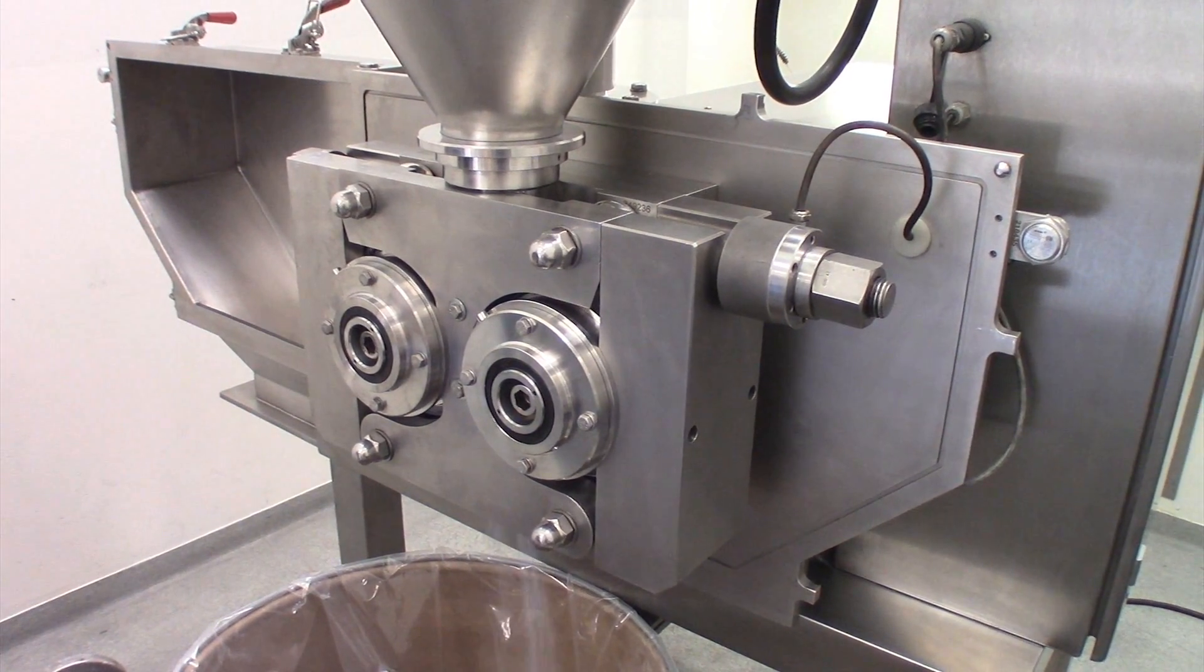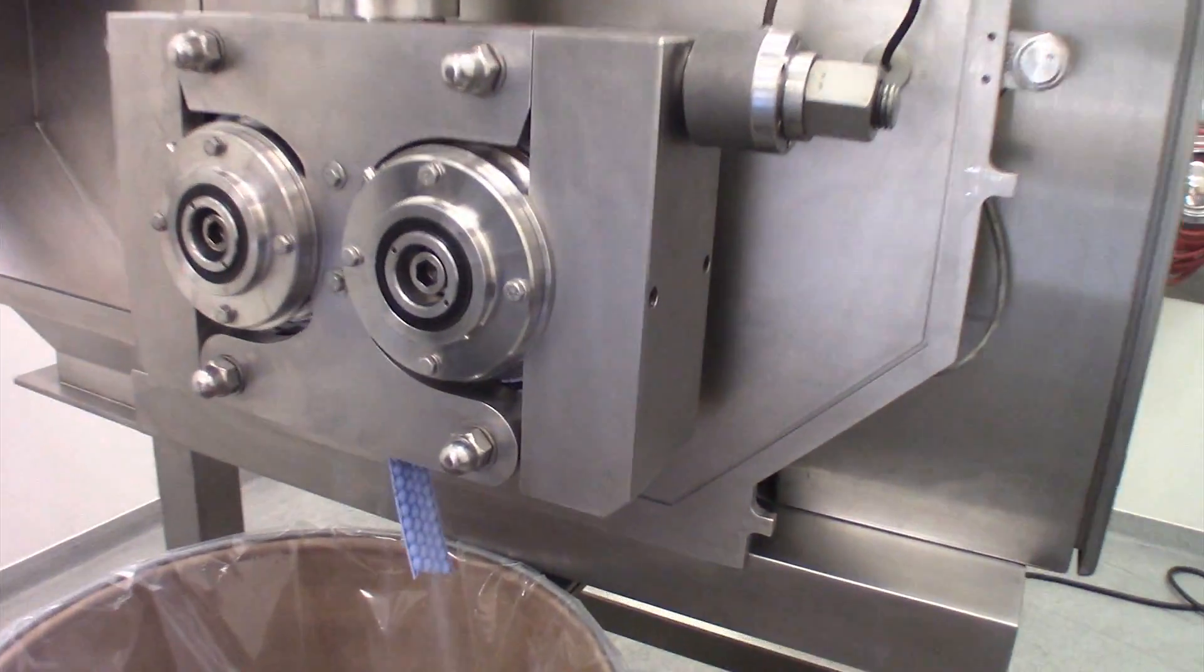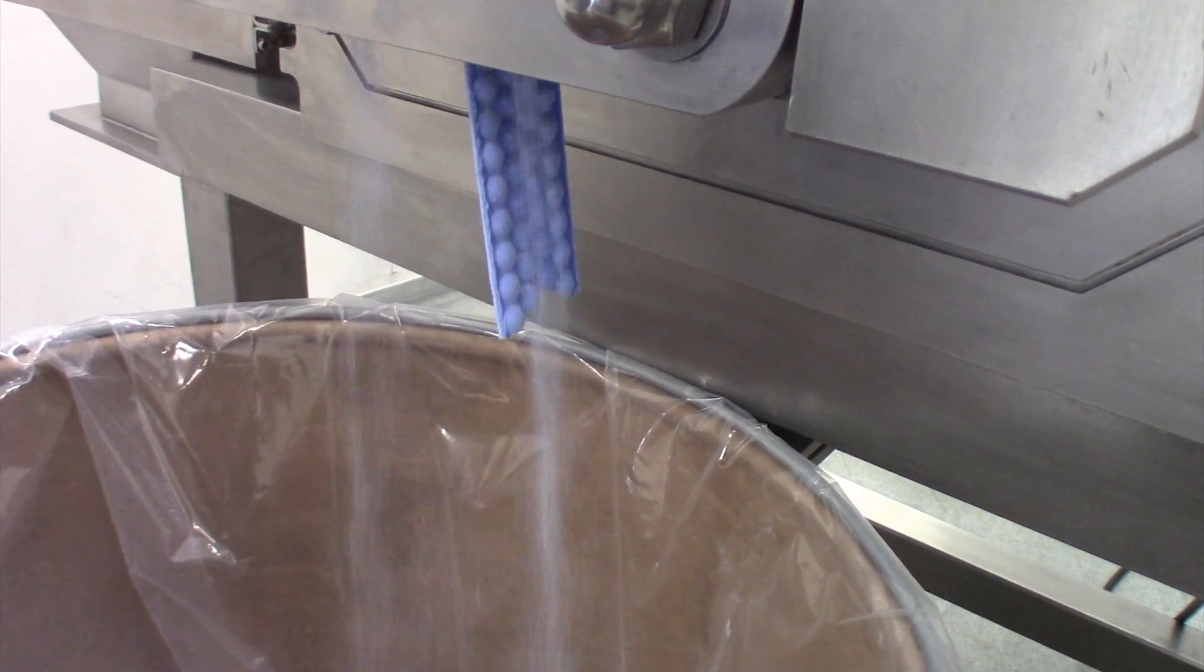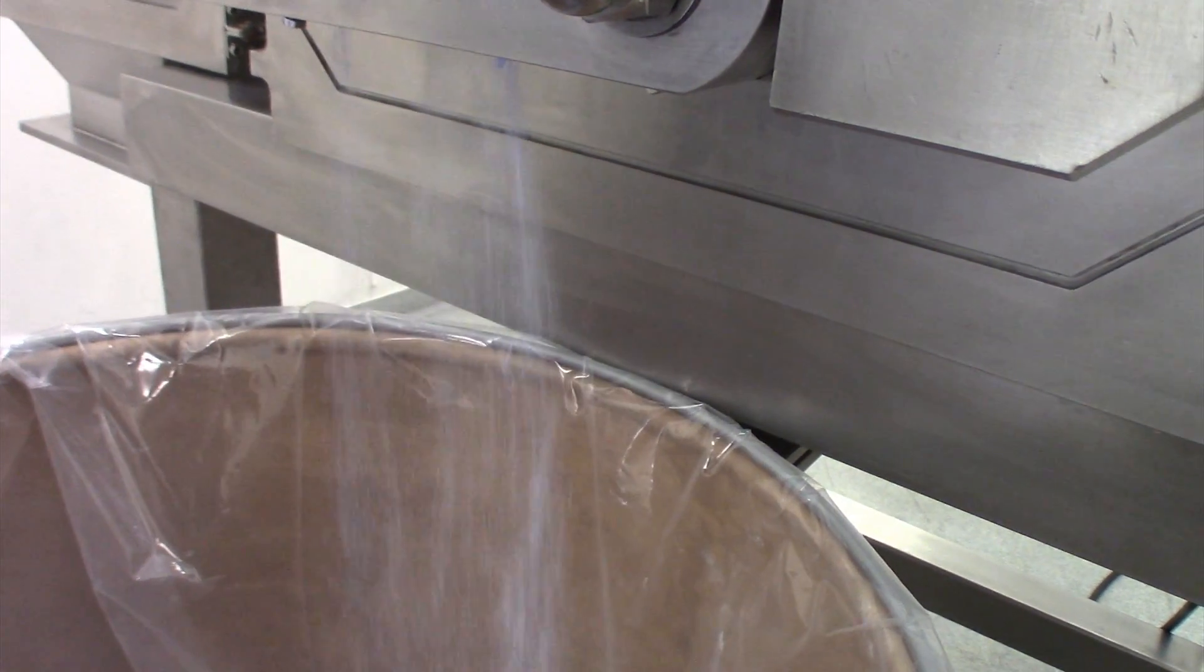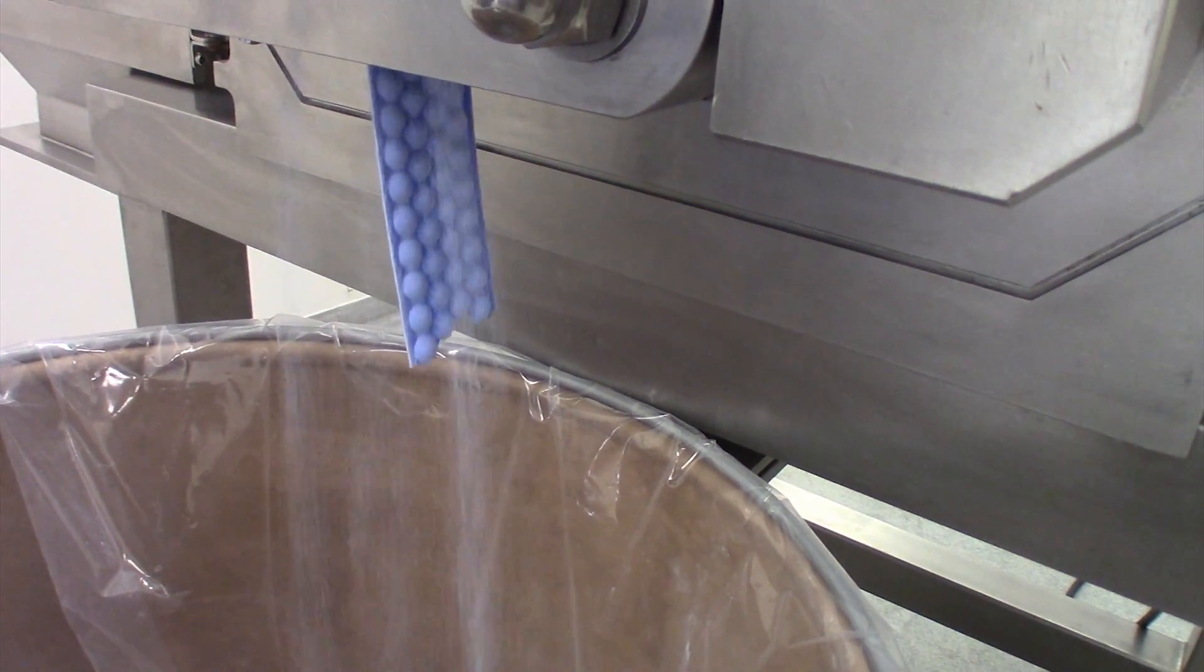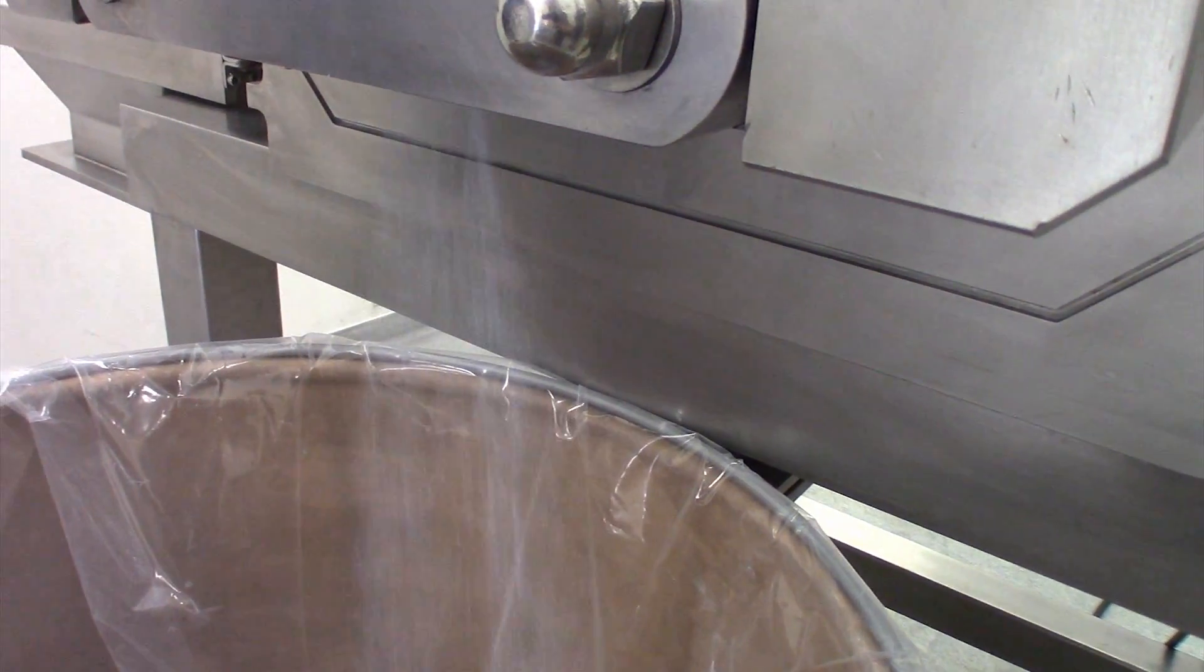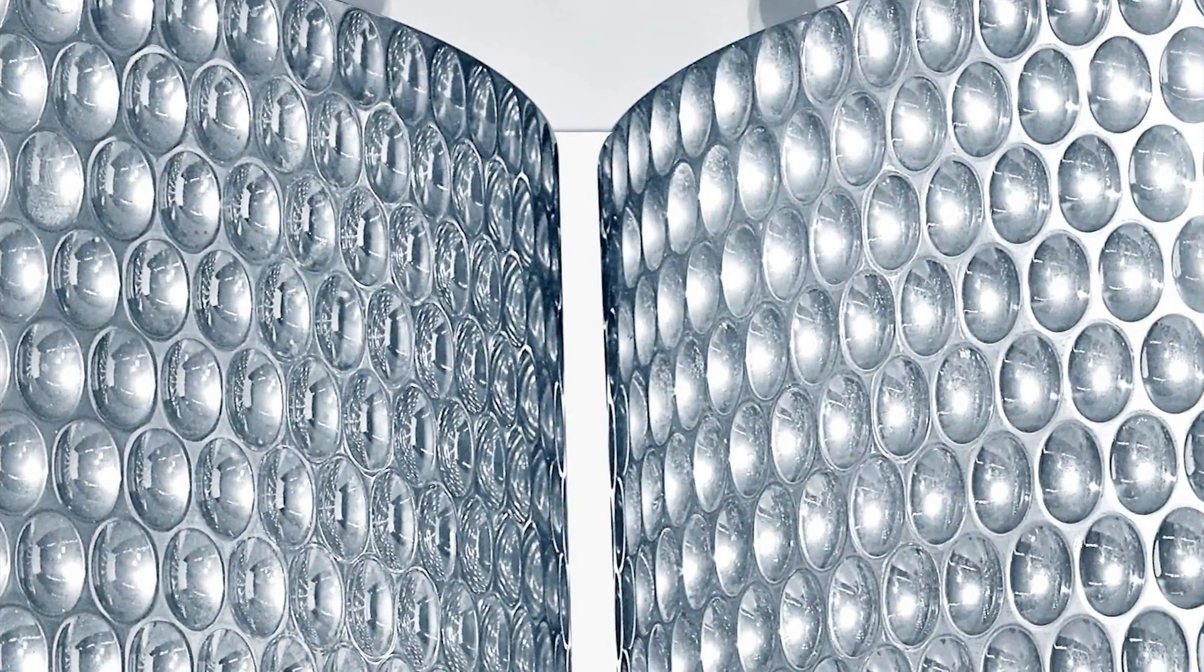The compaction zone has two briquette rollers that compress and shape the briquettes. Even with this pilot scale briquetter, 20,000 pounds of force can be applied to the material.